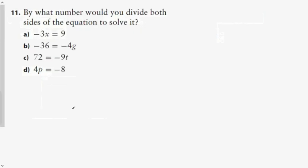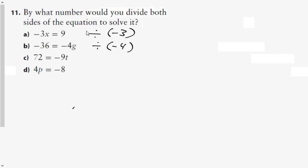Question 11 asks by what number you would multiply or divide both sides. For a, divide both sides by negative 3. For b, divide both sides by negative 4 to get rid of the coefficient. For c, divide both sides by negative 9. And for d, divide both sides by positive 4.